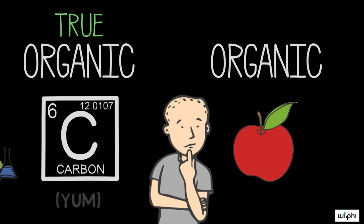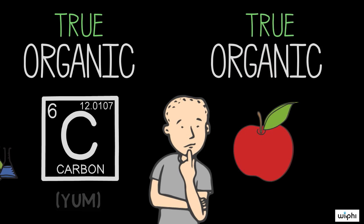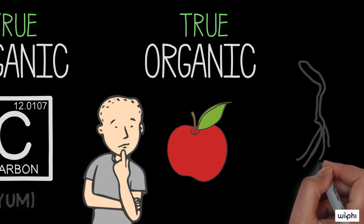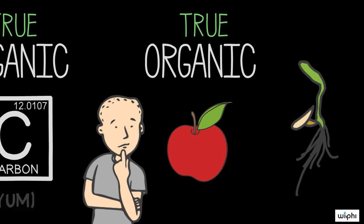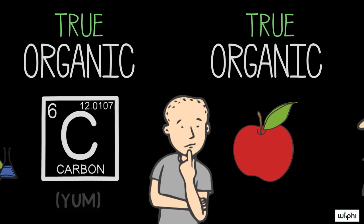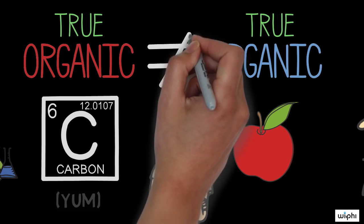The next statement, "organic foods are better for the environment," is also true. But note that now, the definition of organic refers to the methods by which that food was produced and processed. The term "organic" is now used in an agricultural sense, rather than a scientific one.